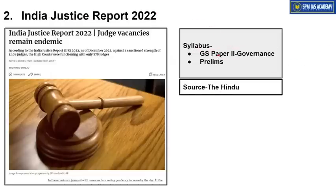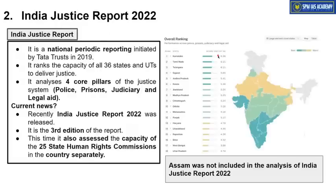The next article is about the India Justice Report 2022, important from GS Paper 2 Governance point of view. The India Justice Report is a periodic report published by Tata Trust since 2019. It ranks states and union territories based on how efficiently their judiciary, police, prison, and legal aid systems function. The current news is that India Justice Report 2022, which is the third edition, has been released.